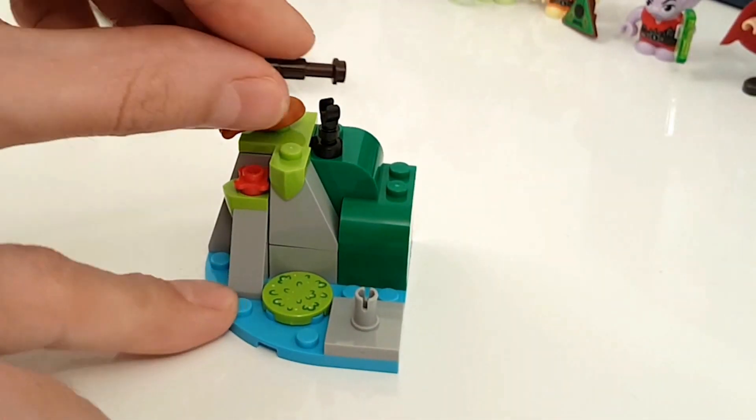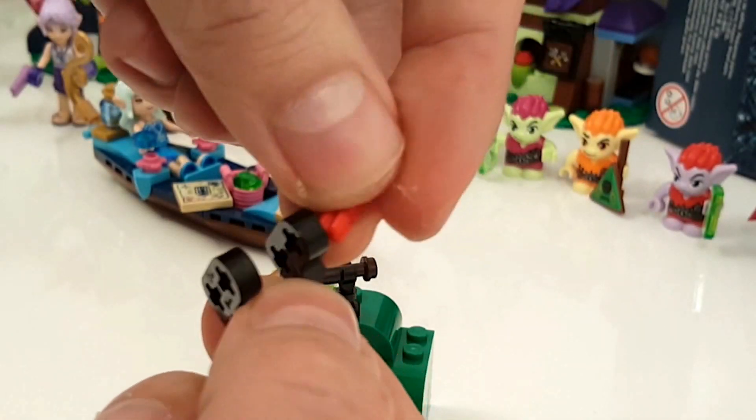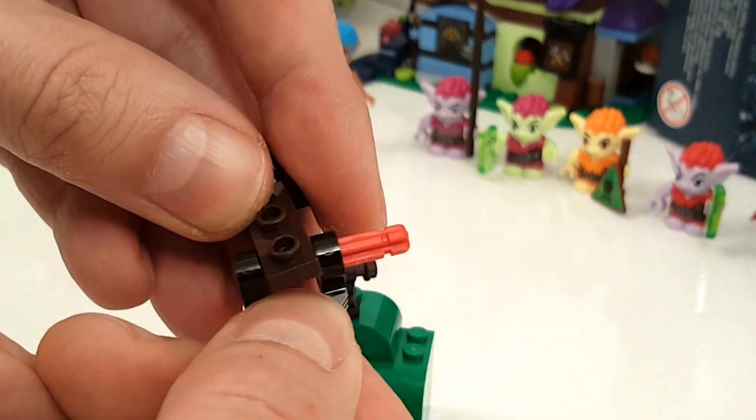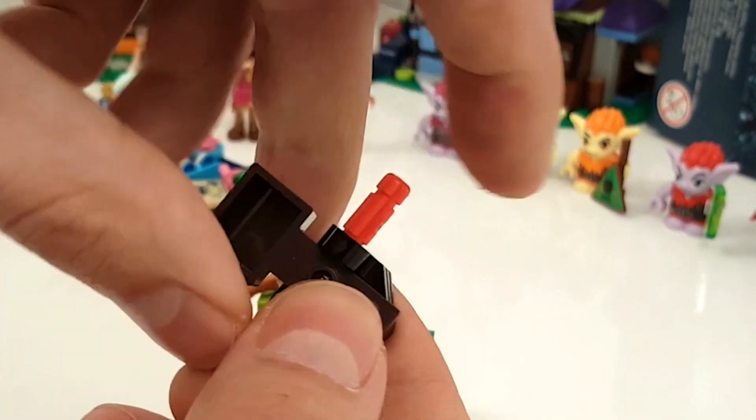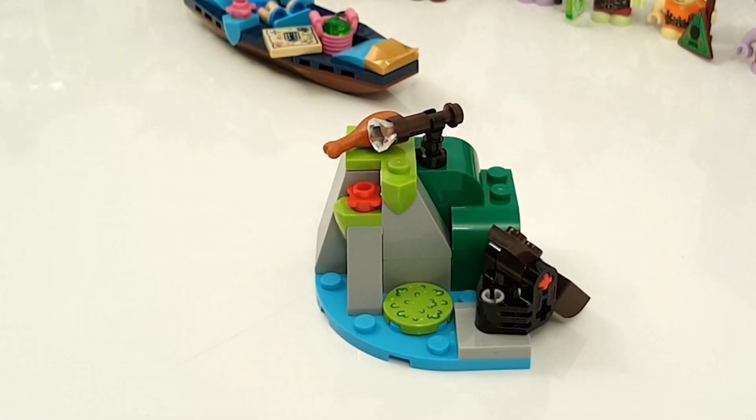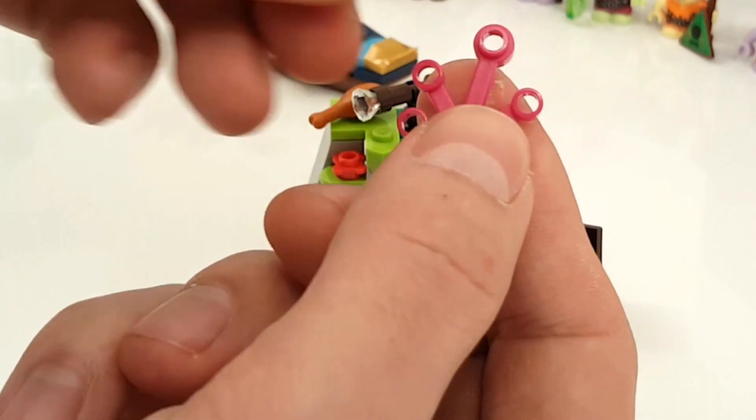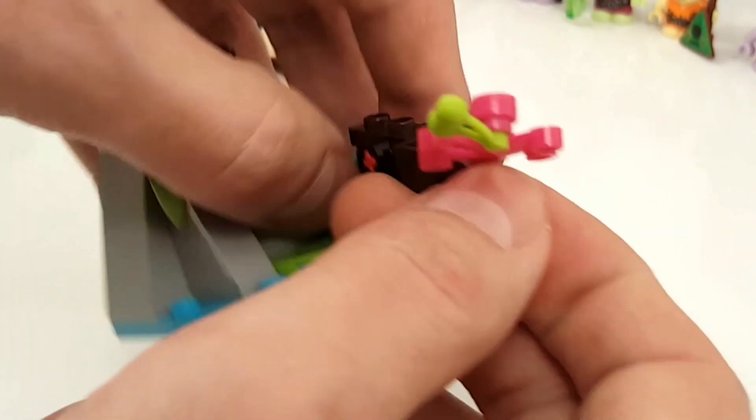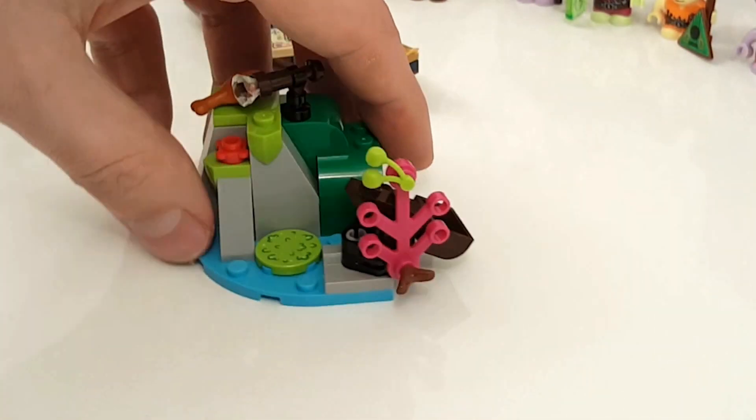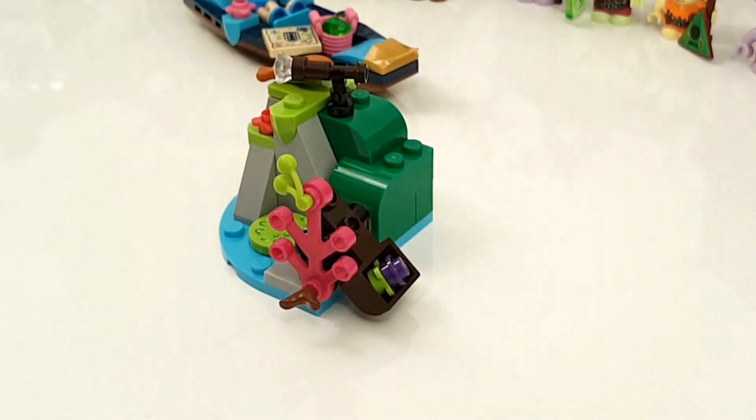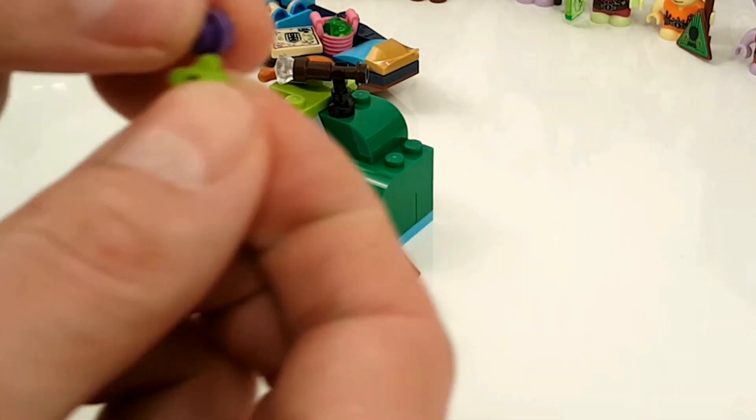Of course a spyglass. And a little shooter at the side. A little tree with some cherries. And some of these evil seeds to shoot with.